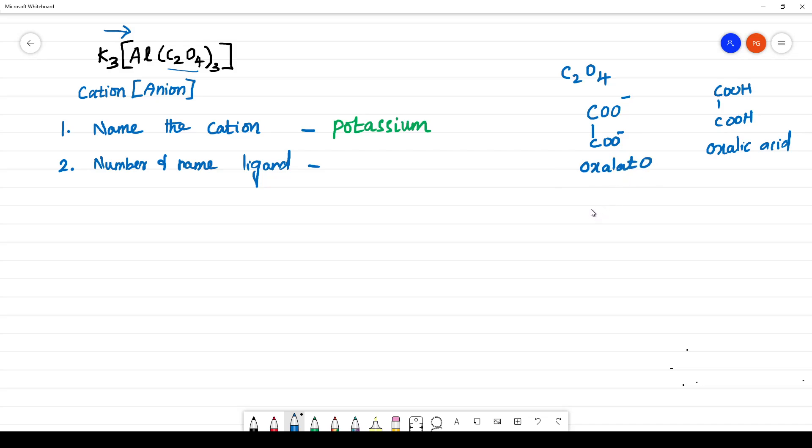You have to end with O. How much is it present? It is 3. What you have to do? You have to put tri. What is the name of the ligand now? It is trioxalato.